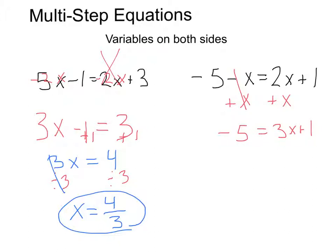So now that I have my variable on one side, I can proceed like I would in a two-step equation. I first have to get rid of this plus 1, so I'm going to subtract 1 from each side of the equal sign. That's going to leave me with a negative 6 equals 3x.